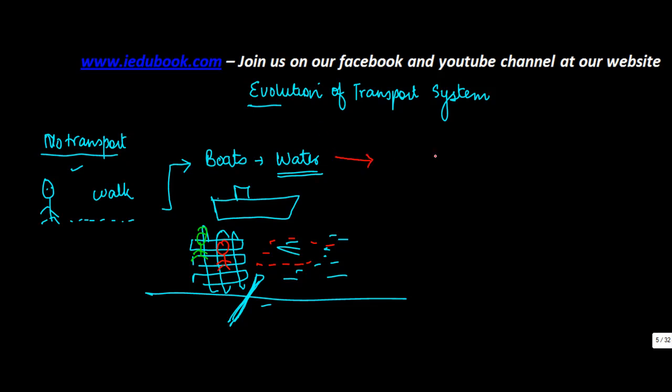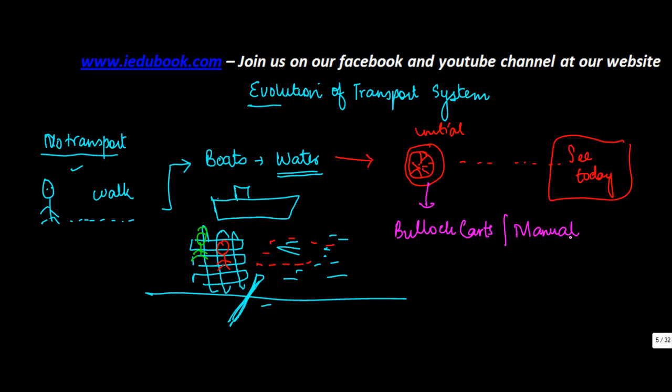As civilization grew, people understood how you can kind of form a wheel. And as wheel was formed, it took hundreds and hundreds of years, from the time when initial wheel was formed, to the wheels that you see today. Now, these wheels which were there, they were initially used in the bullock carts. Or, manual they were. Meaning, that man used to make these and kind of travel from one place to the other.